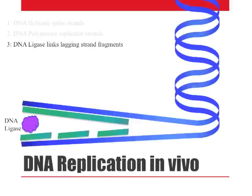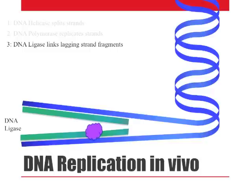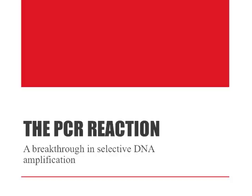Finally, DNA ligase must be used to link together the multiple shorter DNA fragments on the lagging strand. Each of these steps for in vivo DNA replication will also be important for understanding the in vitro PCR reaction.